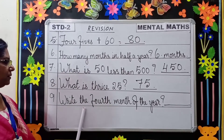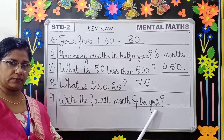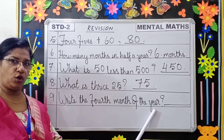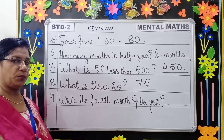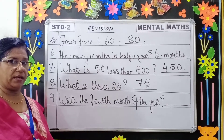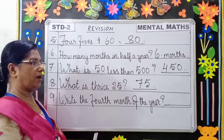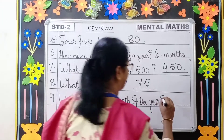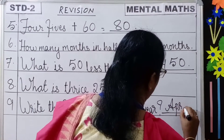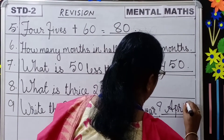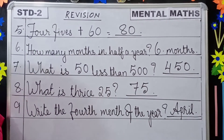Moving to the 9th question: Write the 4th month of the year. You all know all the months. So the 4th month is January, February, March, April. April is the 4th month of the year.